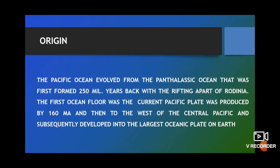Let's look into the geological formation of the Pacific Ocean. It is believed that the Pacific Ocean was formed out of the Panthalassa Ocean that surrounded the Pangea landmass. The Pacific Ocean evolved from the Panthalassic Ocean, which was first formed 250 million years back with the rifting apart of Rodinia. The first ocean floor of the current Pacific Ocean was produced around 160 million years ago, and then it extended to the west of the Central Pacific, subsequently developing into the largest oceanic plate on Earth.